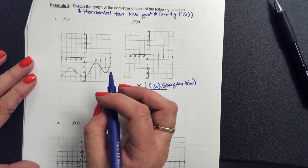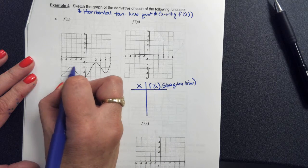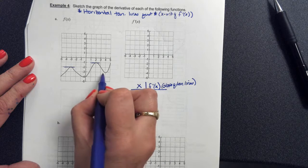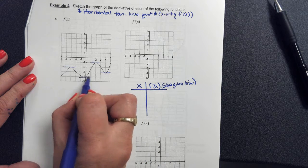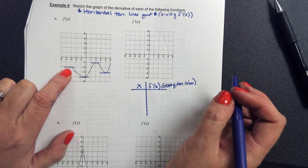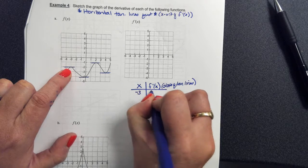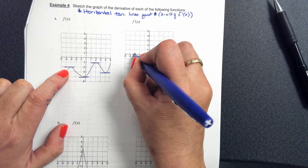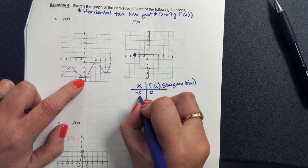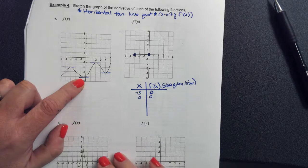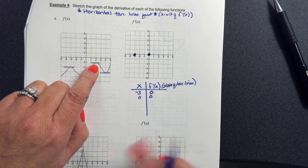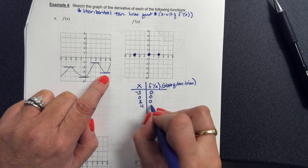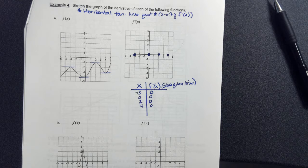Horizontal lines have a slope of 0. So at x equals negative 3, the slope is 0, meaning on the graph of the derivative I have the point (negative 3, 0). At x equals 0, I have (0, 0). At x equals 2, I have (2, 0). At x equals 4, I have (4, 0). Notice my x-axis is divided into five regions by these turning points.